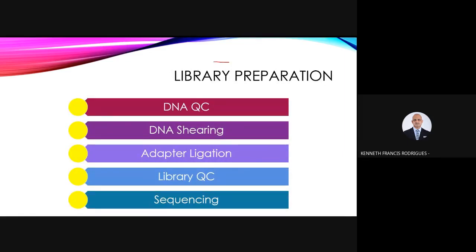The word 'library' pertains to the sequencing library. Just as a library contains books on shelves, when we look at genome sequencing we consider the genome itself as a library. The DNA has a library, and in order to read it you cannot read the entire genome in one go — you have to read individual books. Reading a genome sequence is analogous to reading books in a library: you read each segment separately.